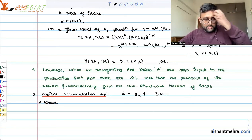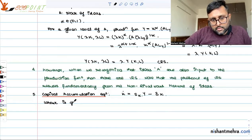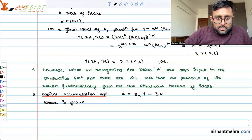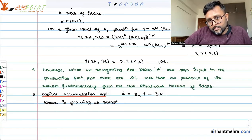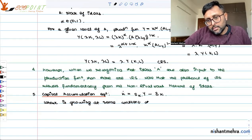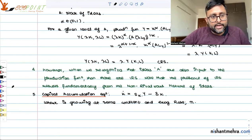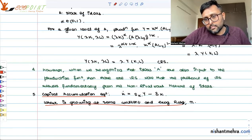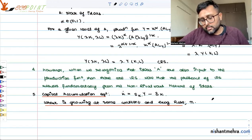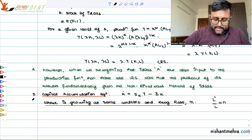Your labor is growing at some constant and exogenous rate n. So it is l dot by l equals to n.